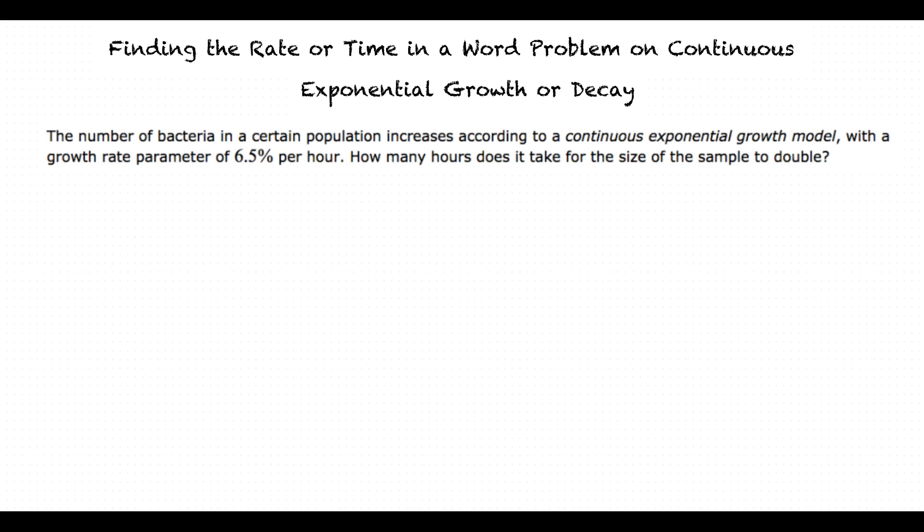In this problem, we are given the rate of growth and we are asked to solve for t. Remember that a percent is equal to a decimal times 100, so we need to divide 6.5 by 100 before substituting it for r. Lastly, we need to round to the nearest hundredths for this problem.